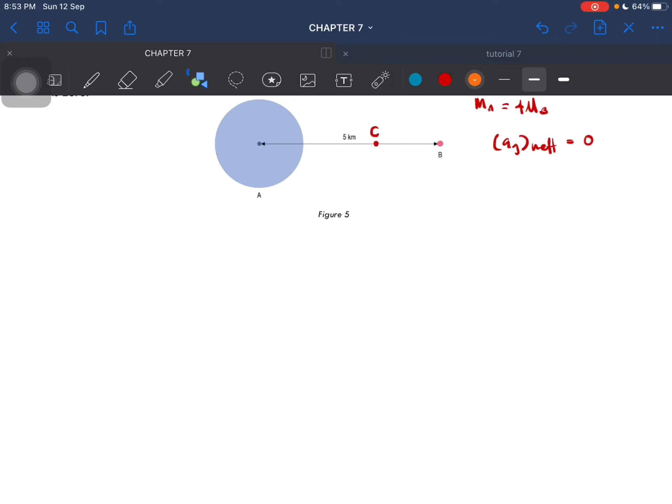Now we can label the distance. And then we have this distance, and then this distance. So this is R_AB. This is X. This is R_AB minus X.